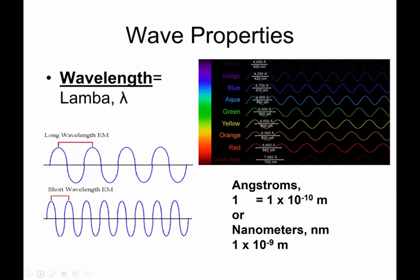Some different properties of waves you need to know. One is the concept of wavelength. Wavelength is abbreviated by the Greek letter lambda, and this is the symbol for wavelength. When I hand-draw it, it kind of looks like that, kind of a curvy, upside-down Y.